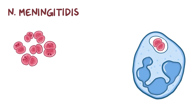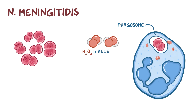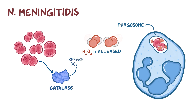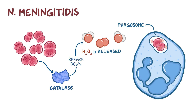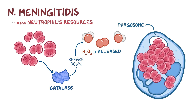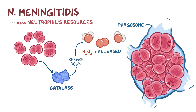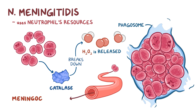Within a neutrophil, N. meningitidis gets wrapped in a phagosome, which is like a bubble inside which reactive oxygen species, such as hydrogen peroxide, are released to kill it. However, N. meningitidis releases catalase, which breaks down hydrogen peroxide. Unfortunately, this translates as a win for the bacteria, which now takes over the neutrophil and uses its energetic resources to multiply. The neutrophil eventually becomes too full, bursting open and releasing N. meningitidis into the bloodstream, which is known as meningococcemia.